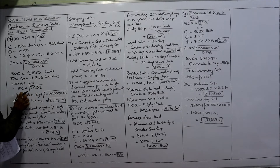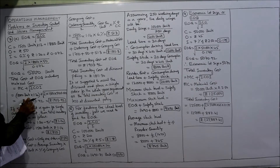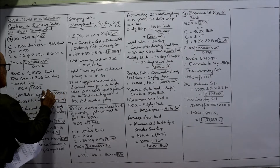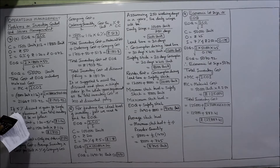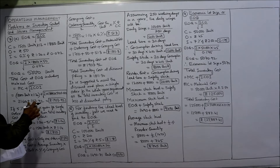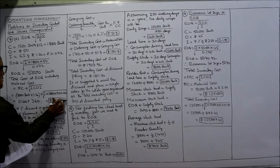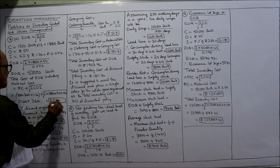Total cost at EOQ including material cost: 18,000 units into 1.20 equals 21,600. Then the variable cost: square root of 2 into 18,000 into 50 into 0.072 equals 360. So the total cost is 21,600 plus 360 equals 21,960.